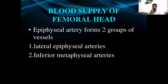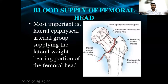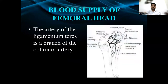The epiphysial arteries form two groups of vessels: lateral epiphysial arteries and inferior metaphysial arteries. The lateral epiphysial arterial group arises from the subsynovial intracapsular arterial ring. This is important because it supplies the lateral weight-bearing portion of the femoral head — the superior lateral portion. The artery of ligamentum teres, or foveal artery, is a branch of the obturator artery.